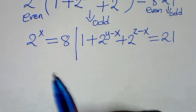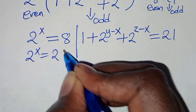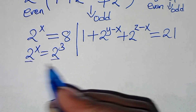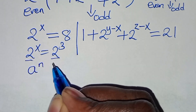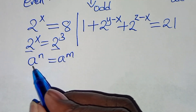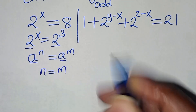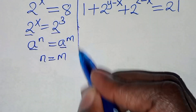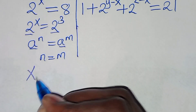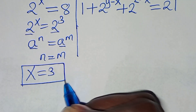From 2 to the power of x equals 8, we can express 8 as 2 to the power of 3. Since the bases are common — if a to the power of n equals a to the power of m, then n equals m — this implies that x equals 3.